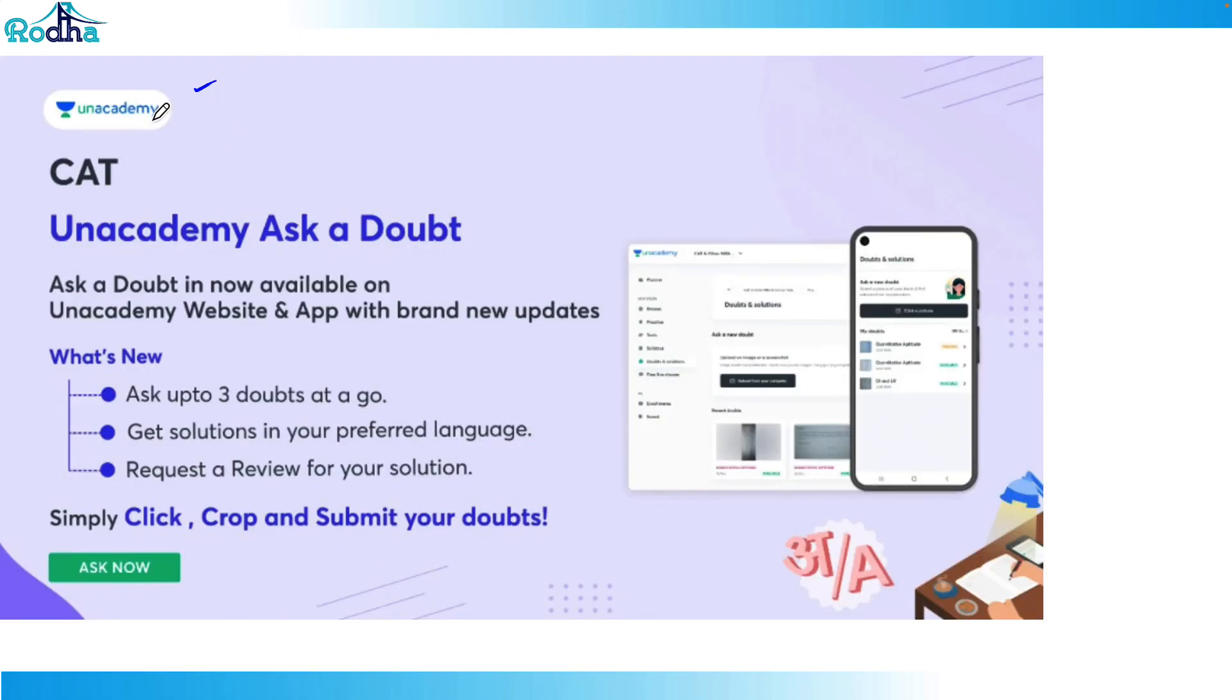Hi everyone, so this is the Unacademy Ask a Doubt feature, and it's absolutely free for everyone. You can download the Unacademy app - it's available on the website and app. You can click any picture, crop the question part, and submit it, and within 4-6 hours you get solutions in video form. You can ask up to 3 doubts at a time till they're cleared. You can get answers in English or Hindi depending on your preferred language. This is available on the website and app, absolutely free. Just go to Unacademy, post any doubt, and get a video solution by top faculties. Thank you.